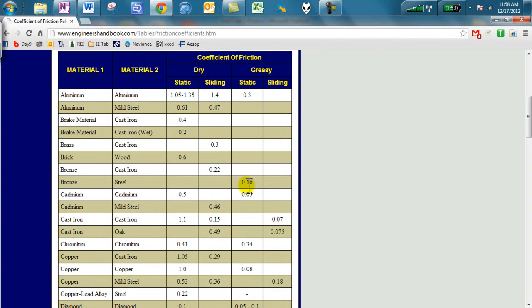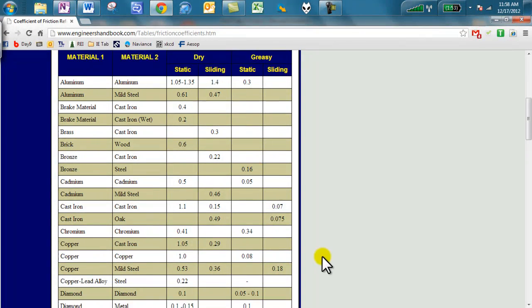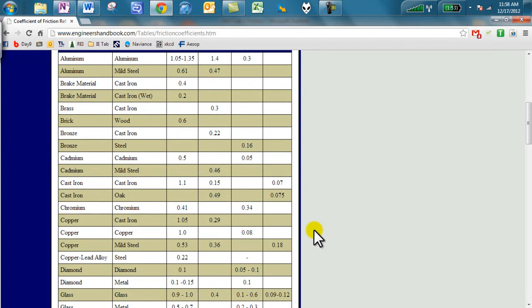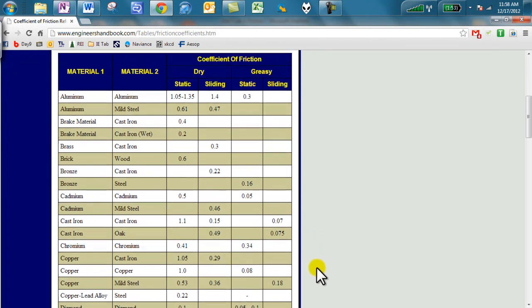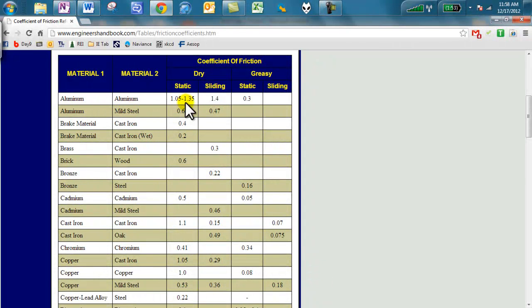Let me just give you a better example here. Notice aluminum on aluminum has a very high dry static and sliding friction. The minute it becomes greasy, however, you will realize that that coefficient goes very low. So again, you will see that the coefficient really does depend on the surface, and the easier it is to slide, the lower the coefficient.